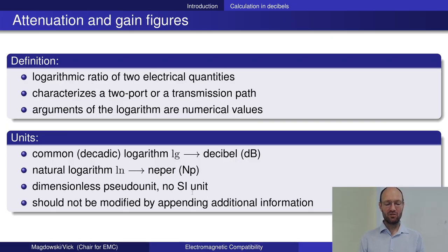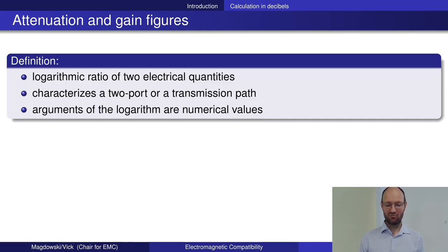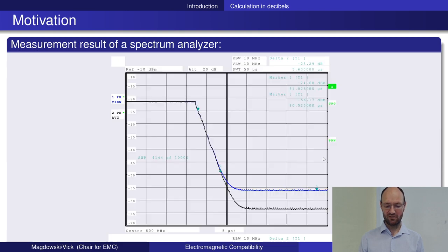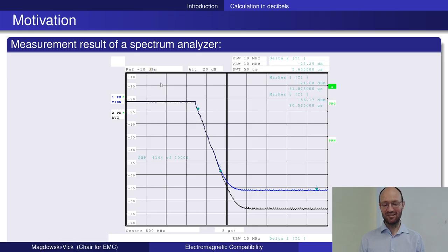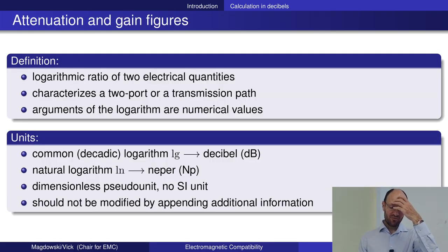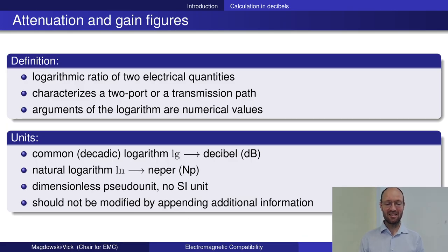Still, like every other unit, it should not be modified or extended by appending additional information — but this is still done, as we saw on the slide before. There is dBm, for example — dB with a small letter 'm' appended — to show that this is not the usual dB but some special kind. Physicists get a little pain when they see something like this, because it's really bad style to extend units with additional information, but for dB it's still often done, and in engineering it's somewhat accepted.